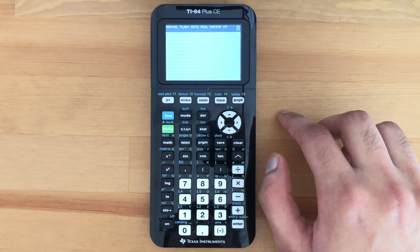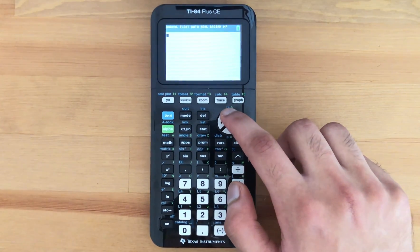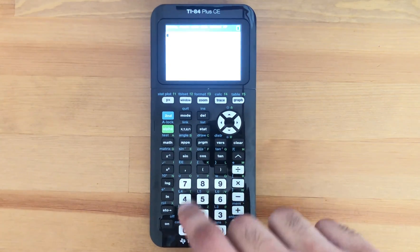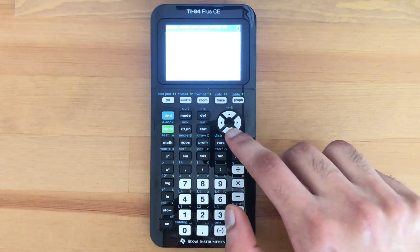So right now I'm going to turn up the brightness, so 2nd and then press up. And then if I want to turn down the brightness again, I'm just going to press 2nd and then down arrow.